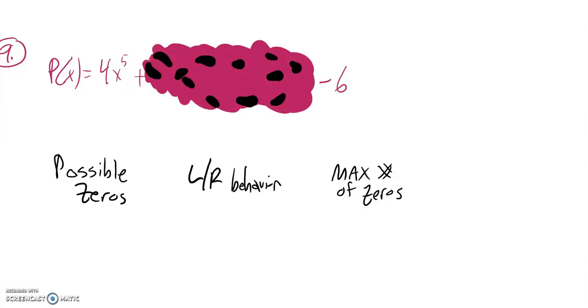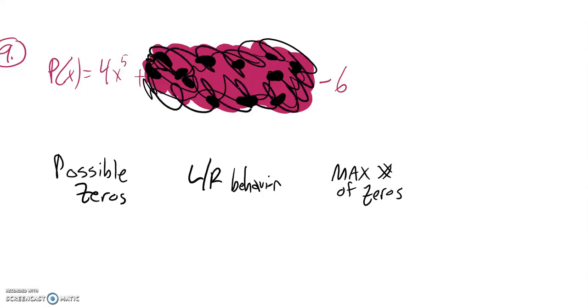This is Math 141, Practice Test 1, and this is question number 9. The premise of this problem is that you have this polynomial where you only know the first term and the last term.